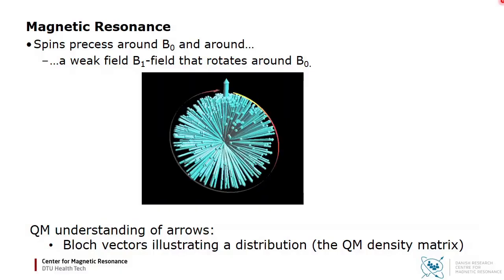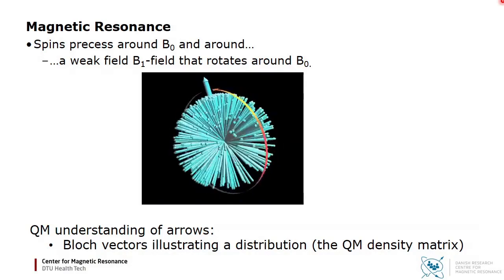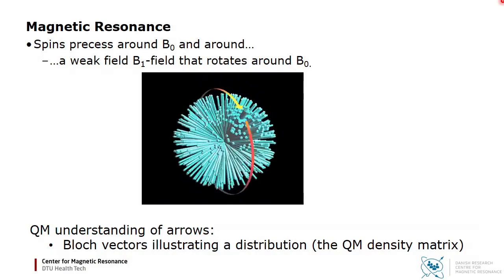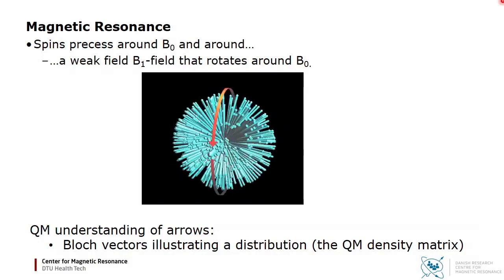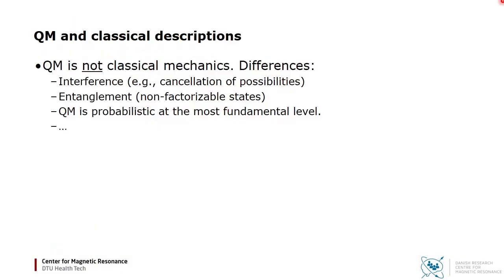So how should we interpret an animation like this? From a quantum perspective, we can think of the arrows as Bloch vectors, and a collection of these as illustrating a distribution compatible with the density matrix. As said, there are differences between classical and quantum mechanics.